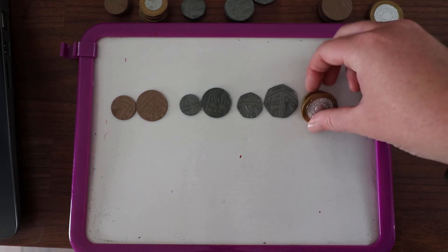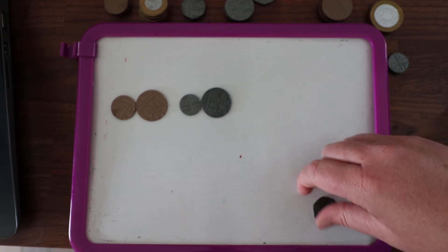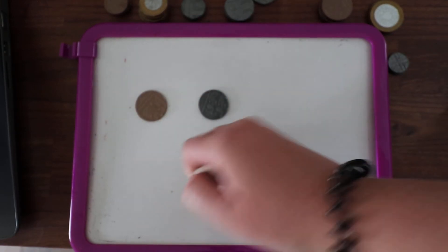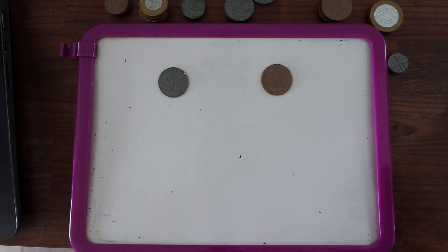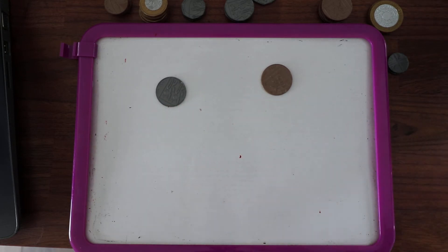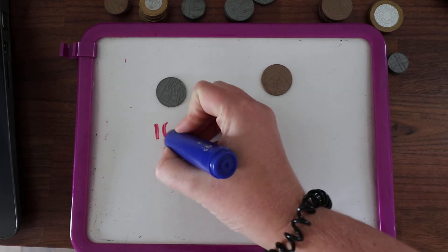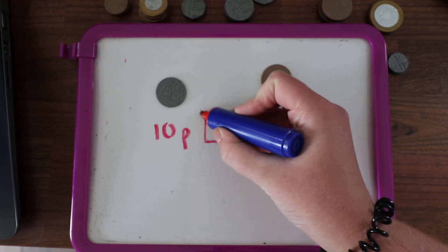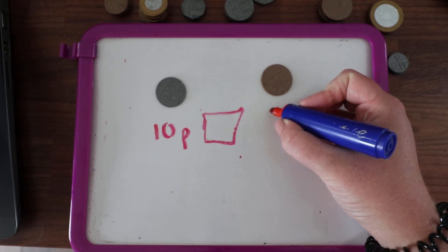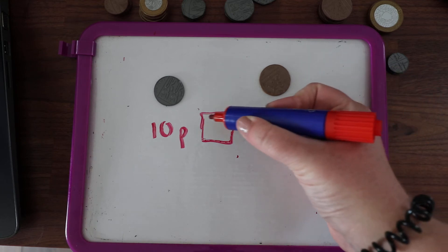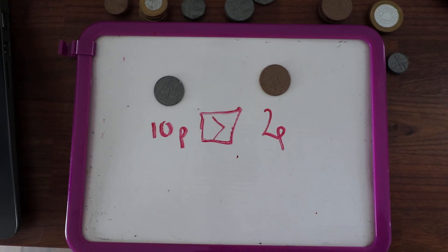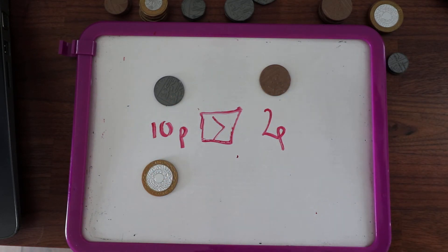Now I'm going to compare some coins. I'm going to pick two coins and compare them — you've got to use your crocodile symbols. So: is 10p greater than, less than, or equal to 2p? It is definitely greater than — 10p is definitely the bigger number. Next one: two pounds and 50p. Both quite big coins.